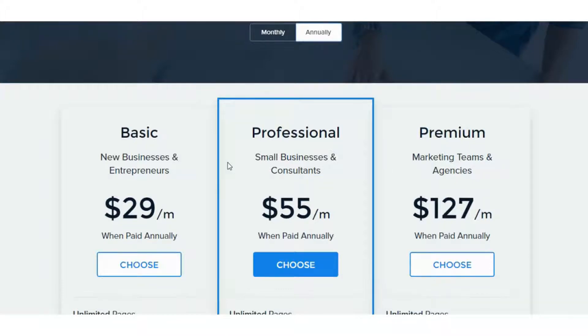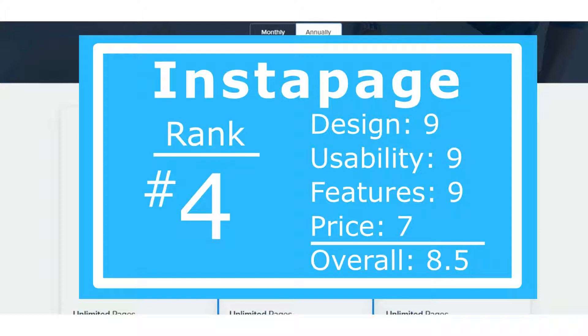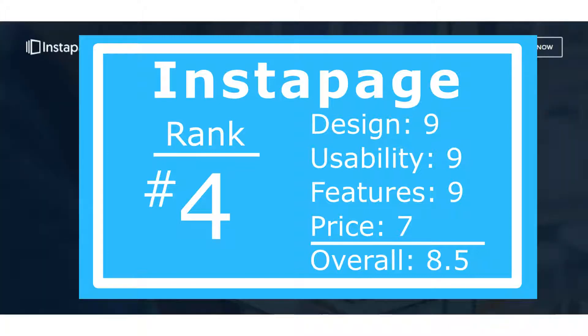We ranked Instapage fourth overall with scores of nine on design, nine on usability, nine on features, and seven on price. If you take price out of the equation, it's the highest-ranked tool across design, usability, and features. Those categories are equally weighted, averaging out to 8.5 out of 10.